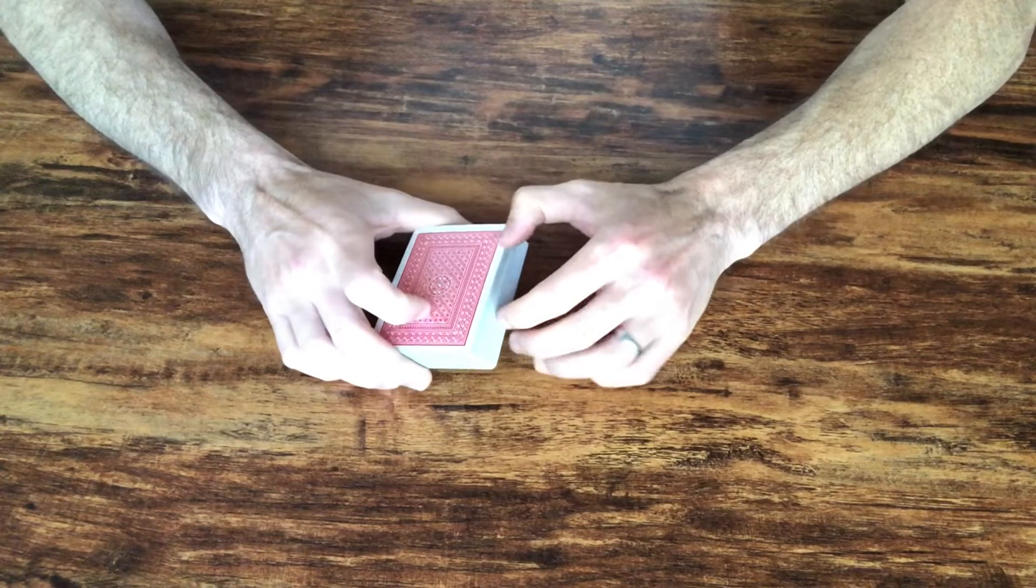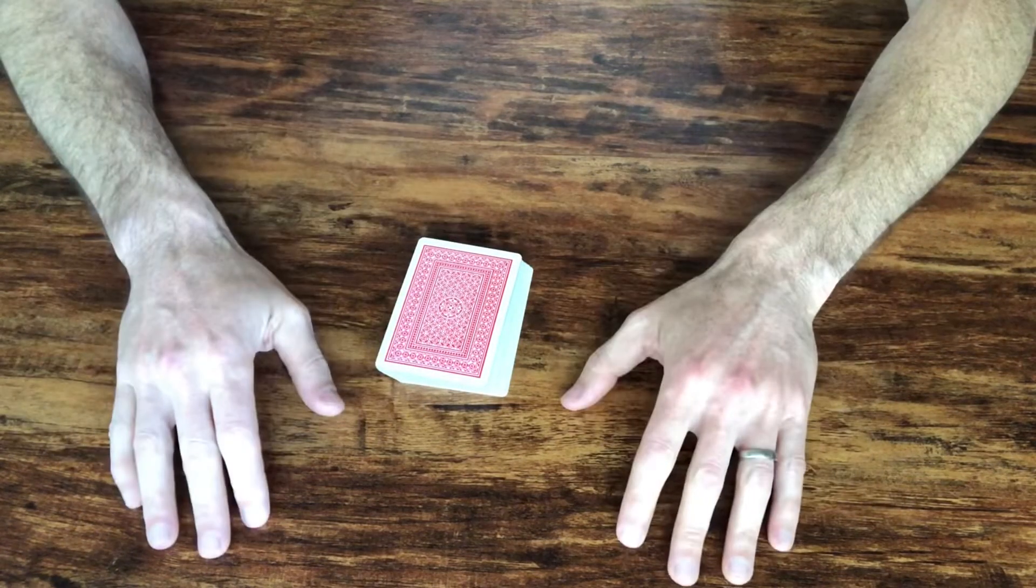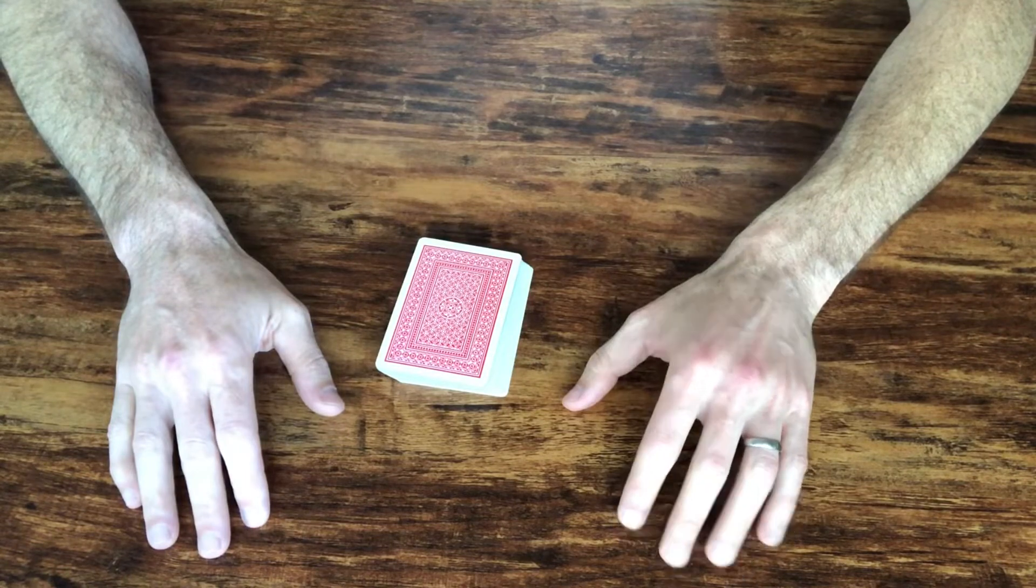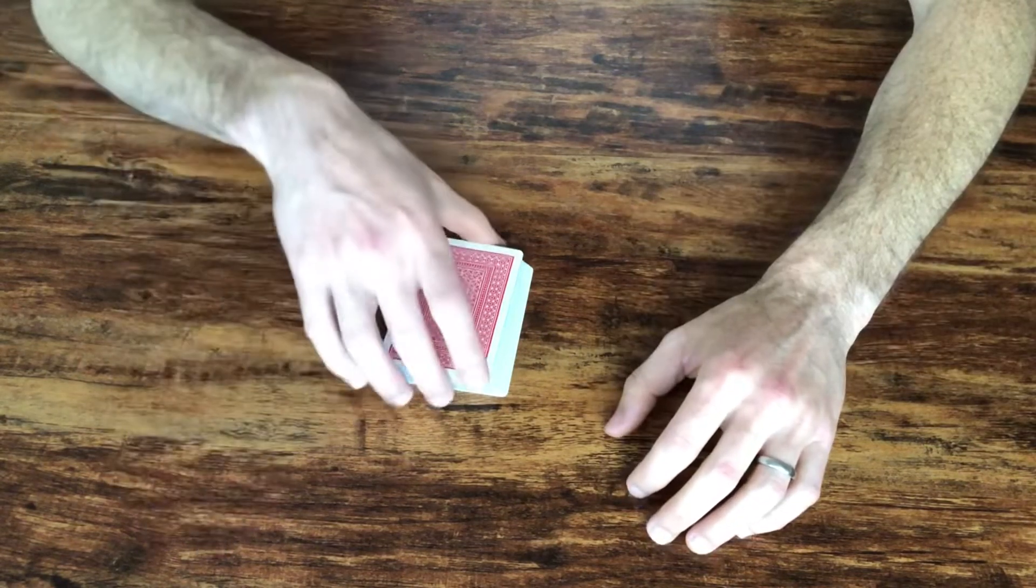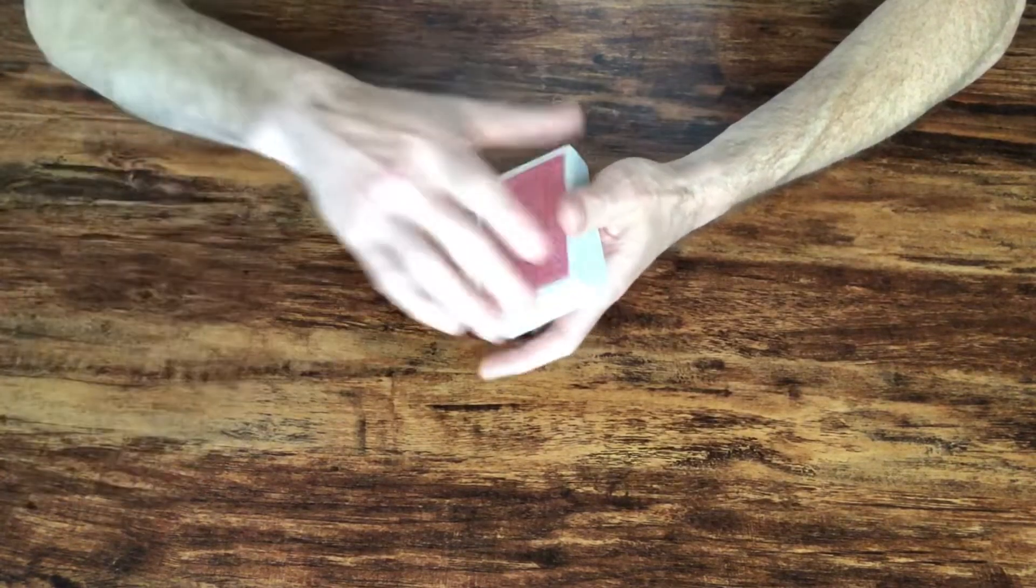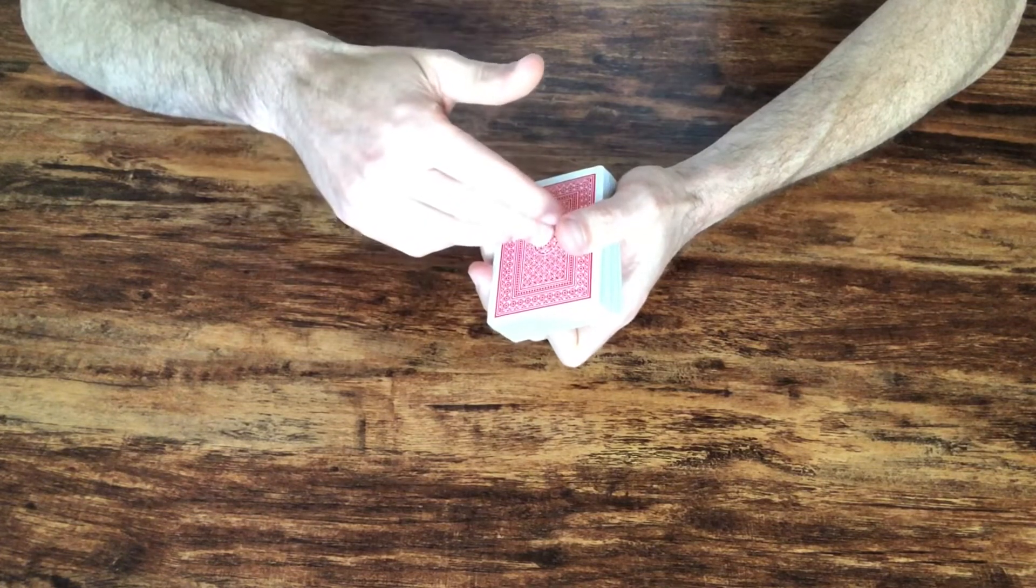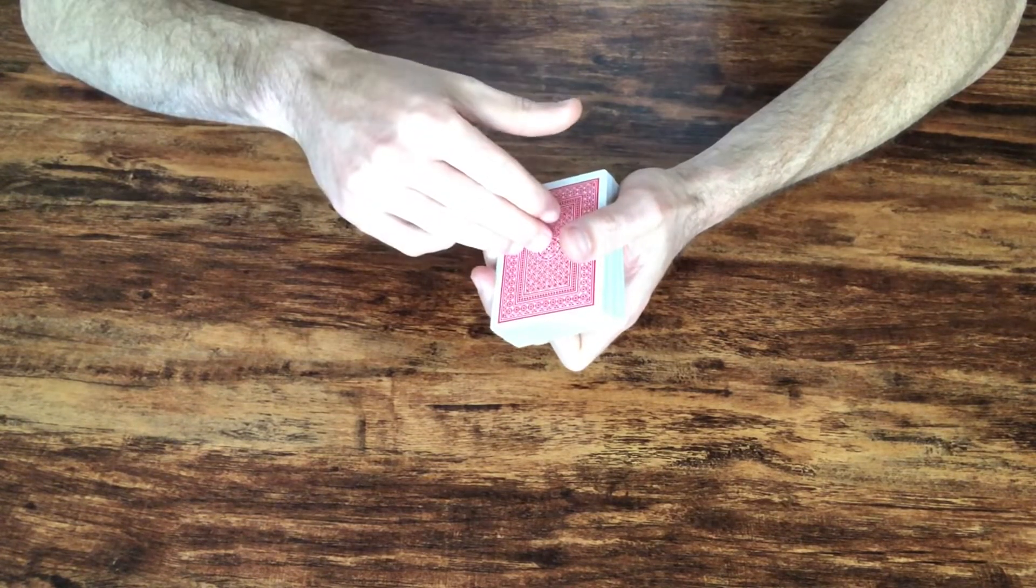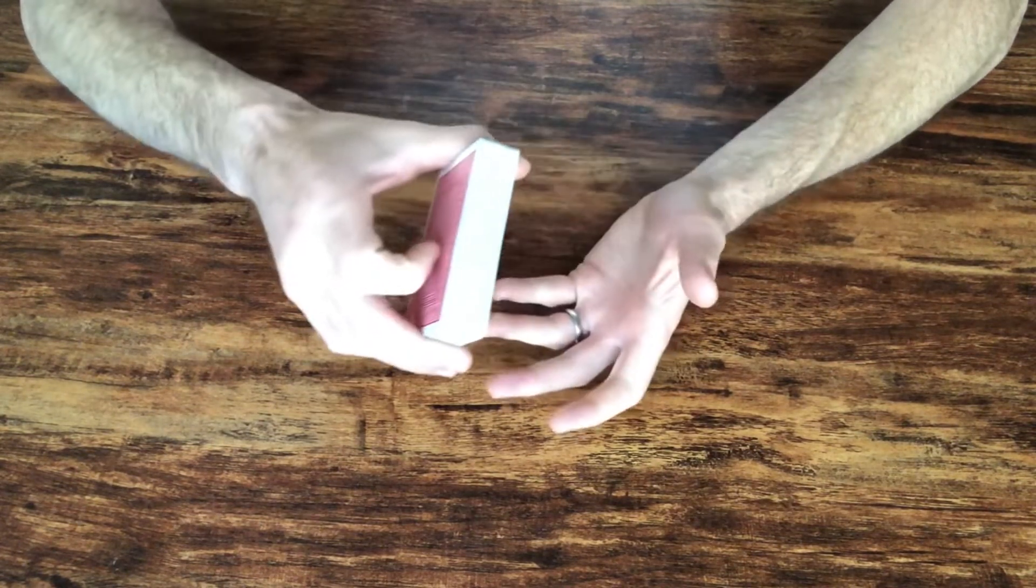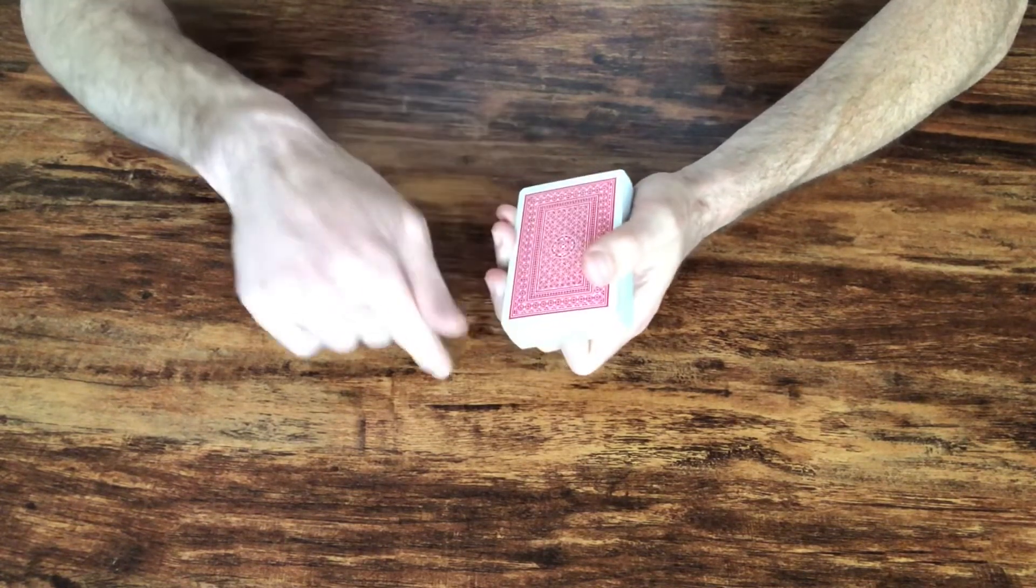Essentially what you want to do is ask for a card and ask the spectator to name a number. They're going to give you a card and they're going to give you a number, and you want to try to place that card at that number. Every once in a while, probably one out of 52 times, you'll get that number exactly.